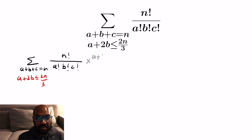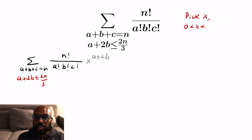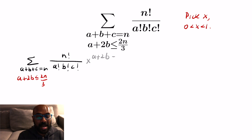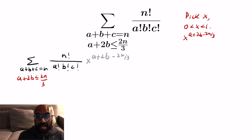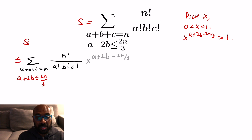We're going to see a really neat way to address this by augmenting the expression we had earlier. We'll multiply by a variable x raised to the a plus 2b — that's the quantity involved in our inequality. We're going to select an actual value of x strictly between 0 and 1. If we augment the exponent by subtracting 2n over 3, then a plus 2b minus 2n over 3 is non-positive in our expression, so x — being between 0 and 1 — raised to that exponent is strictly greater than 1. So letting s be the sum we're interested in, s is less than or equal to this expression when we put in x raised to a plus 2b minus 2n over 3.